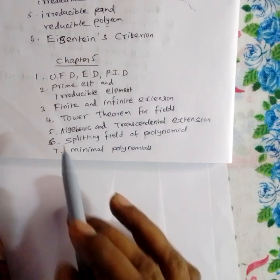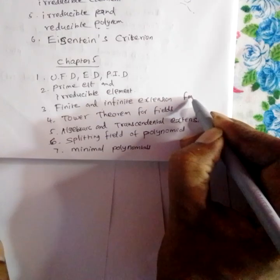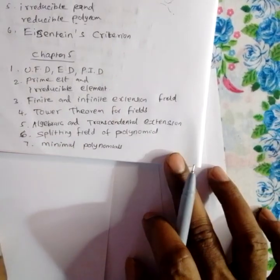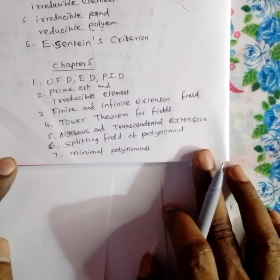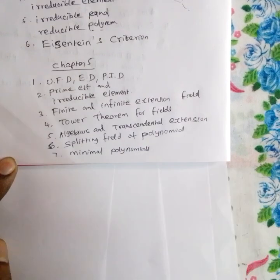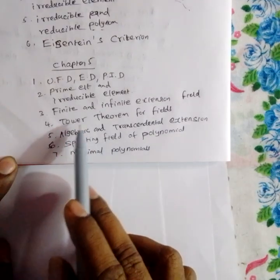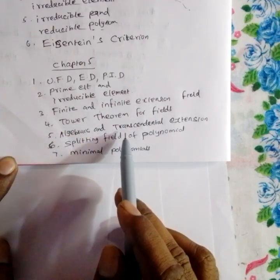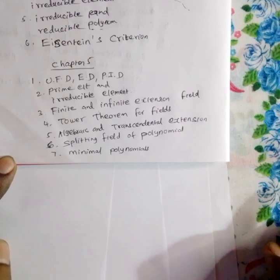Chapter 5 introduces field theory. There are finite and infinite extension fields, and the concept of a tower of fields and subfields. Topics include algebraic extensions, transcendental extensions, splitting fields of polynomials, and minimal polynomials.